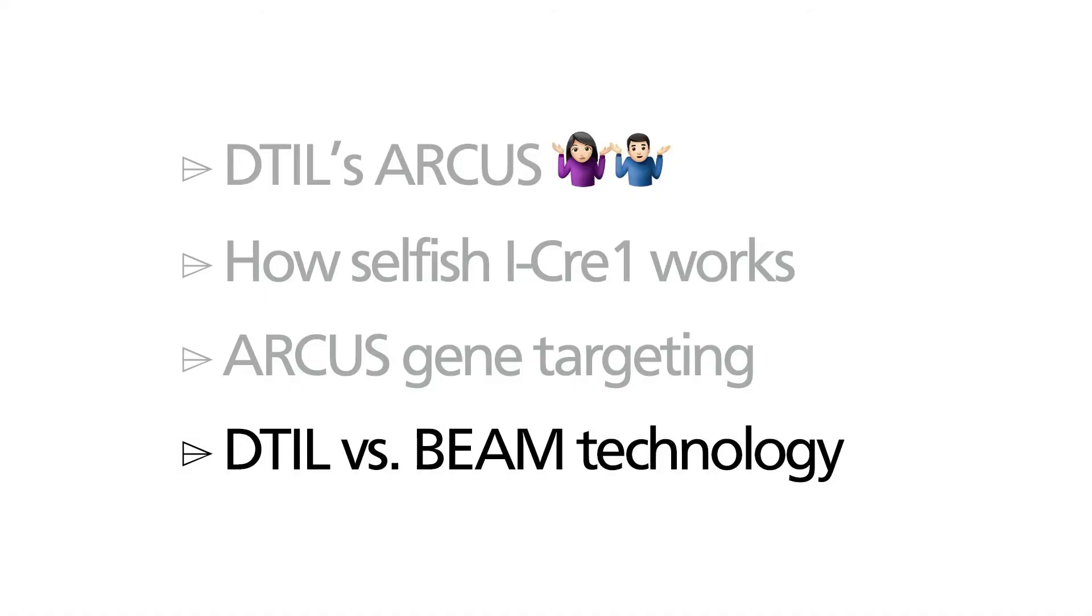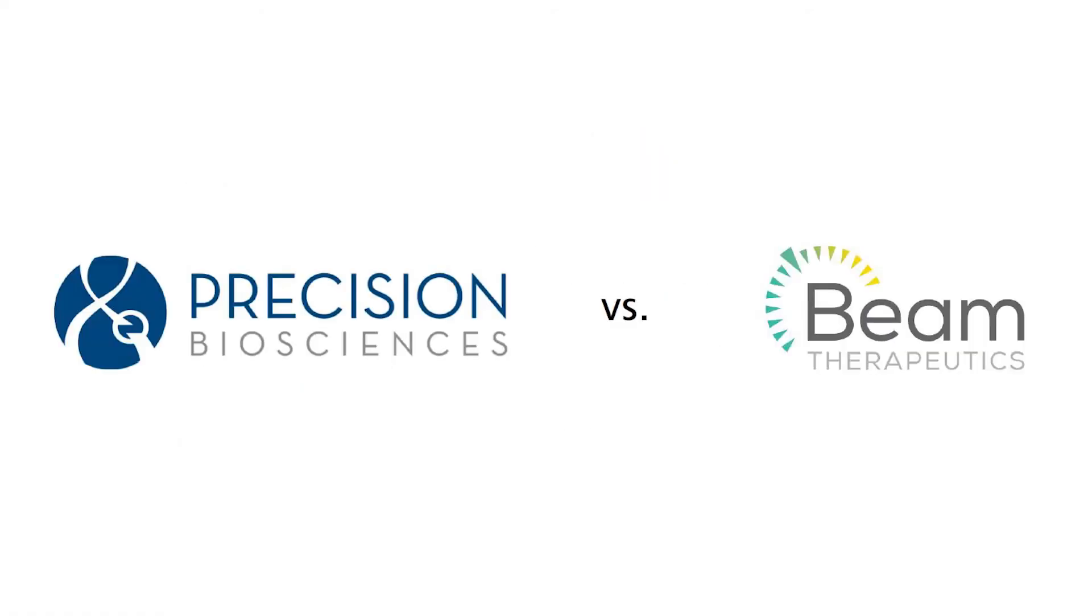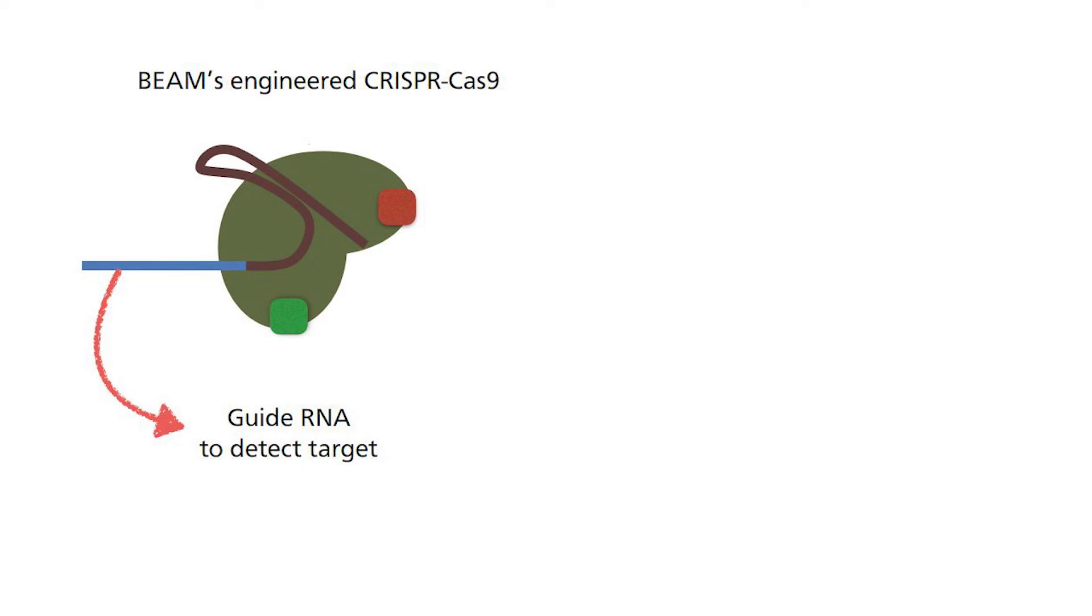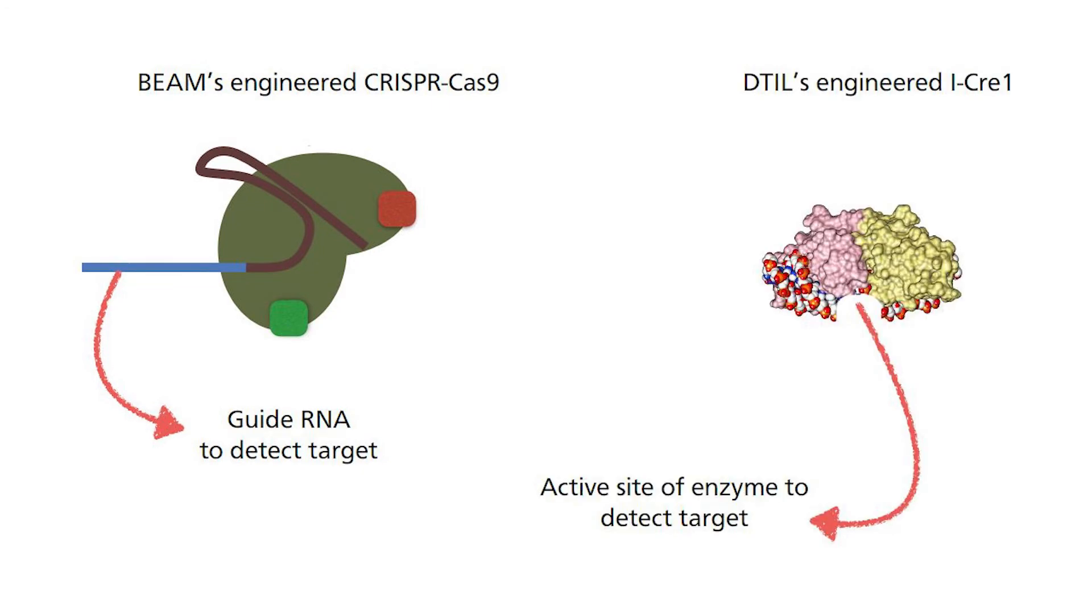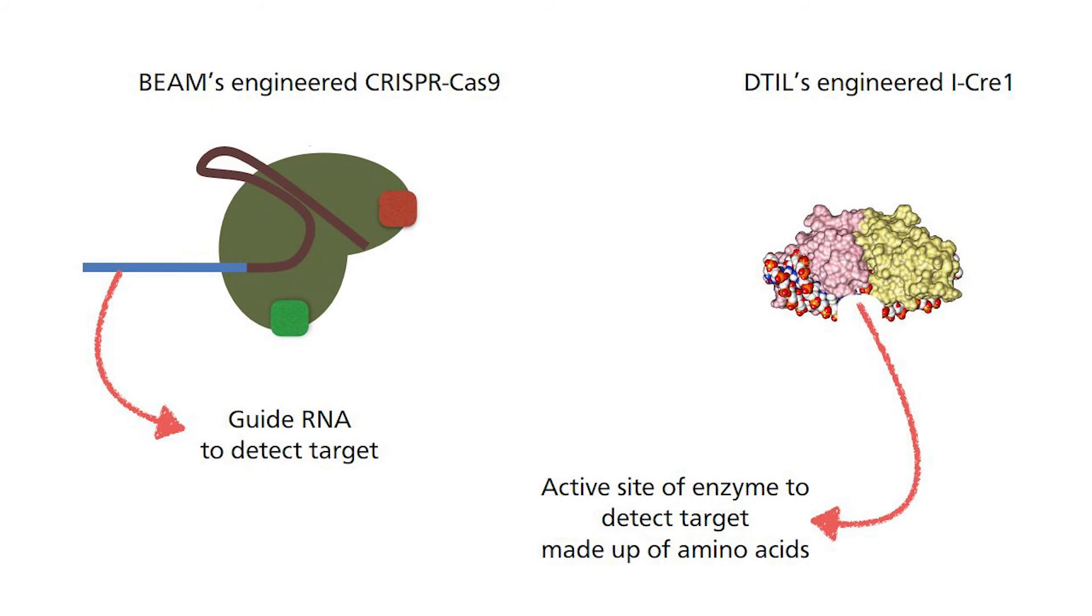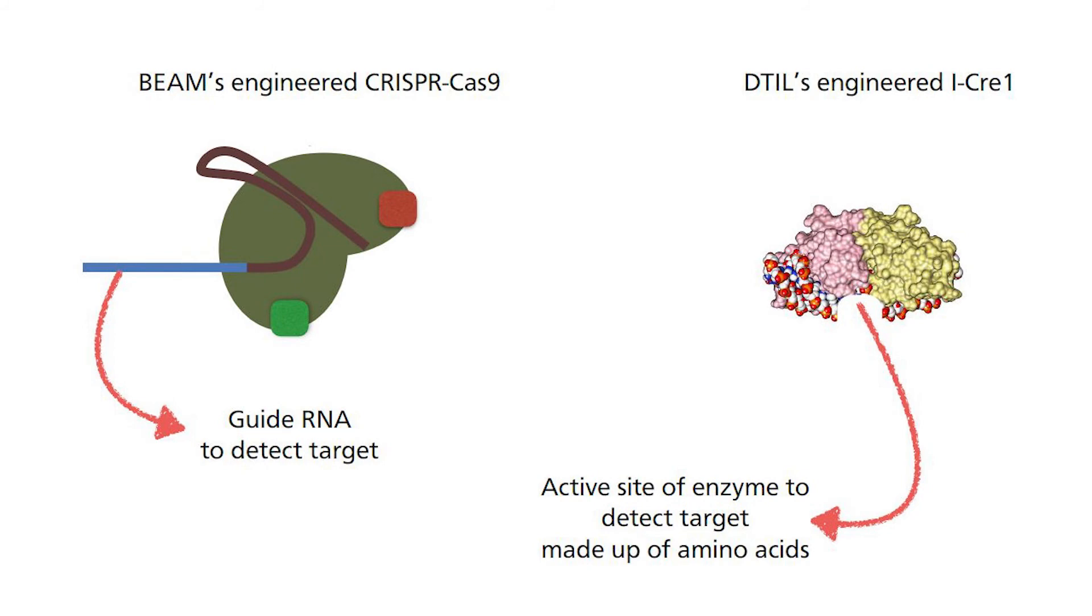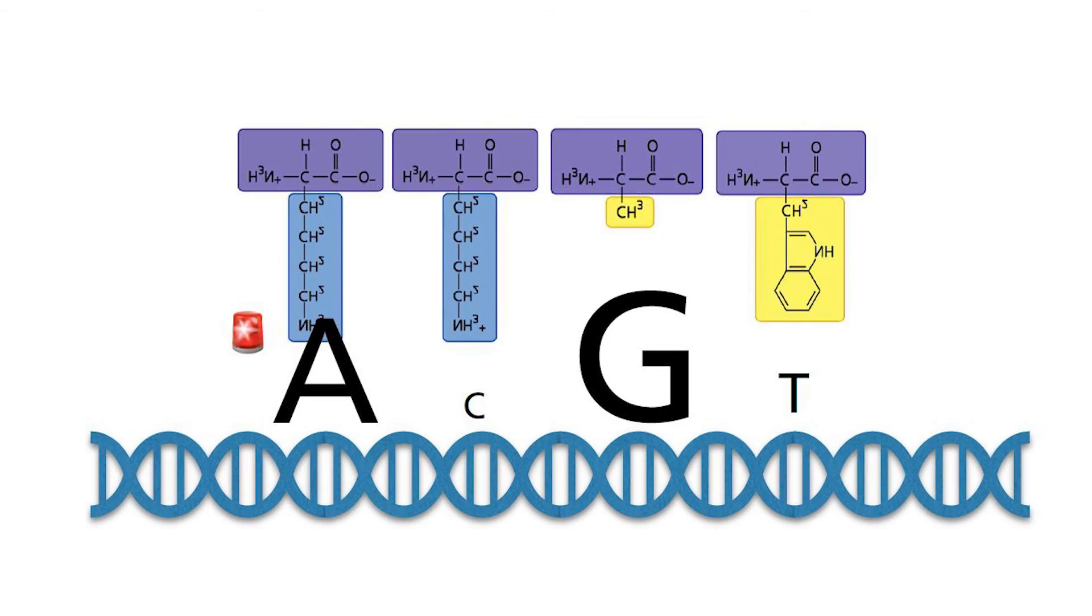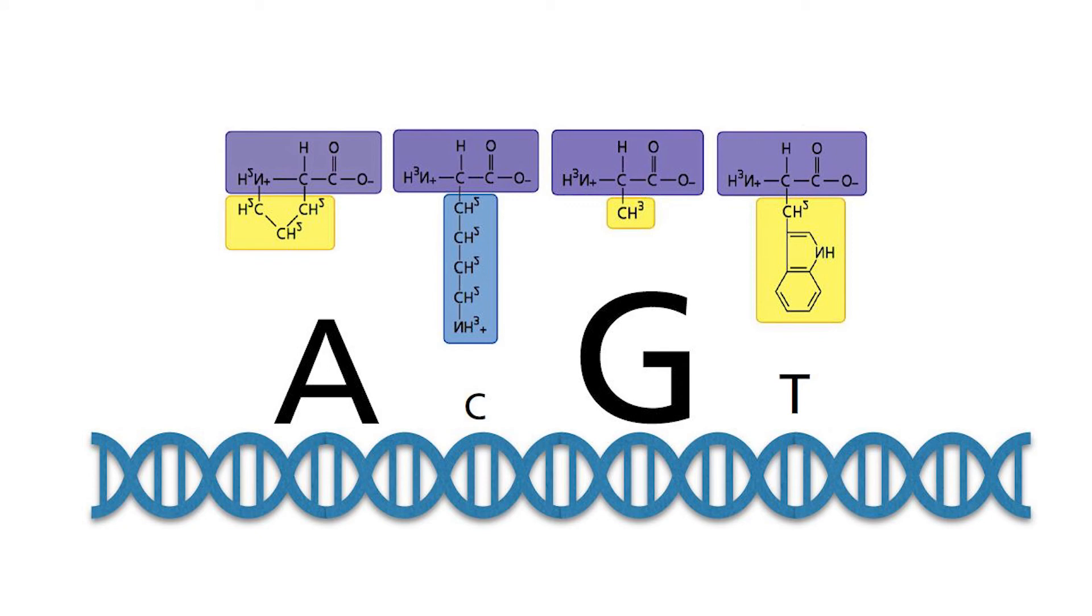How does the target recognition sequence of the Arcus technology from Precision Biosciences compare to that of the CRISPR-Cas9 from Beam Therapeutics? The difference between DTIL and Beam Therapeutics is that Beam's technology utilizes a guide RNA in the CRISPR-Cas9 system, whereas the DTIL technology utilizes amino acids within the active site of the enzyme.